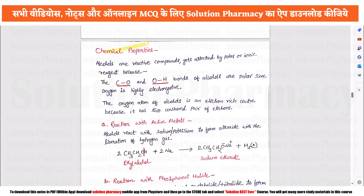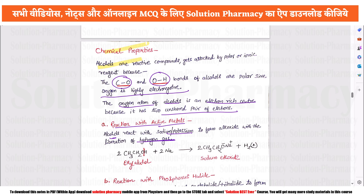Now for chemical properties: alcohols are reactive compounds that can react with polar or ionic reagents. This is because alcohols have C–O bonds and O–H bonds. The oxygen atom is electronegative and is an electron-rich center due to two unshared pairs of electrons. Alcohols can therefore react with active metals such as sodium or potassium, releasing hydrogen gas.